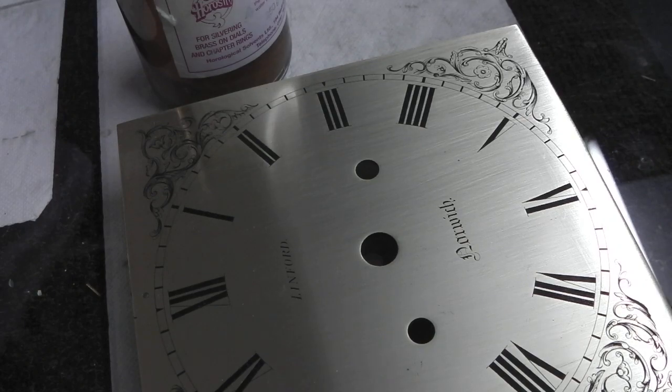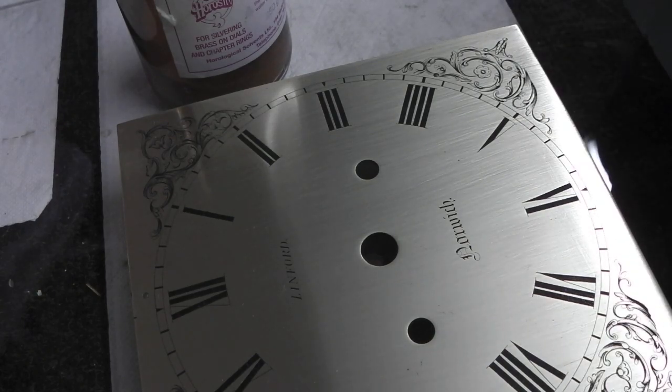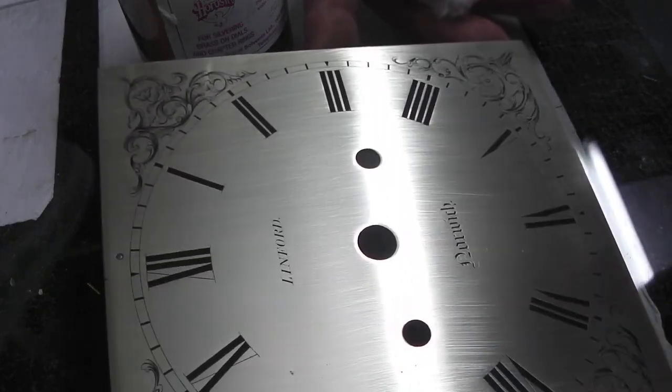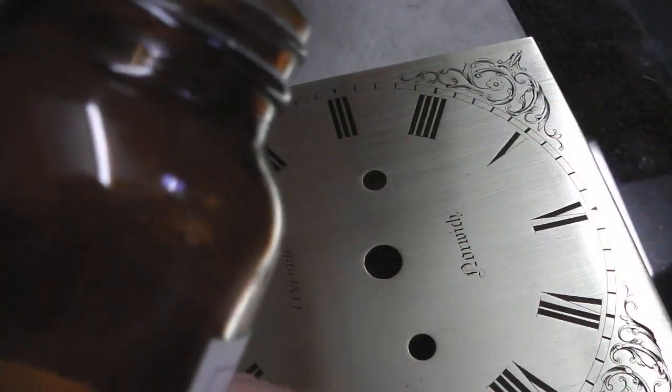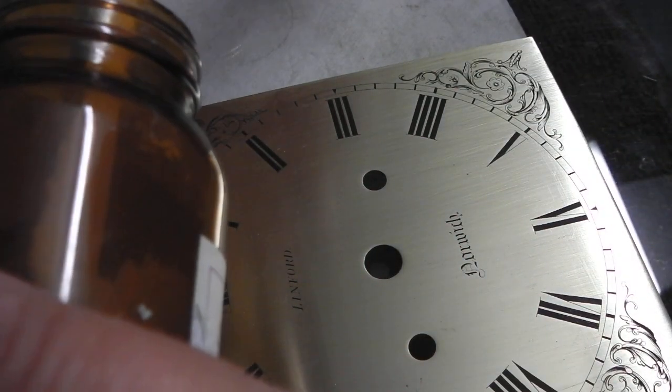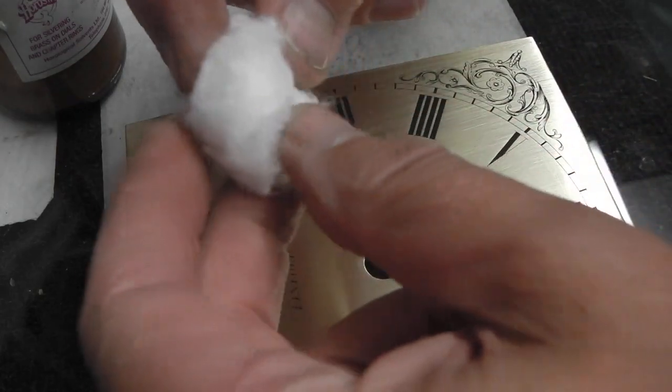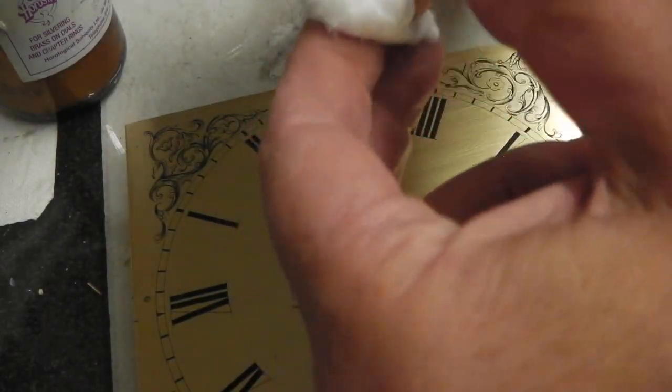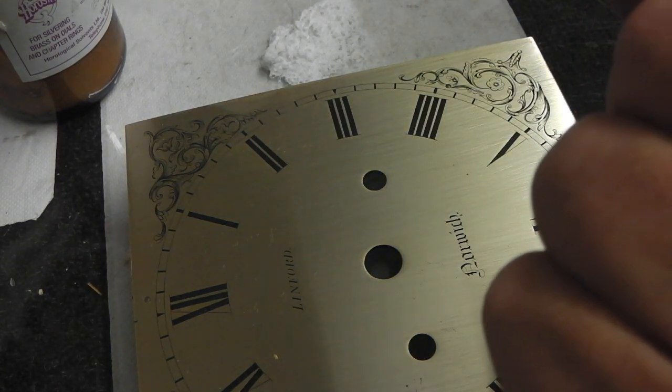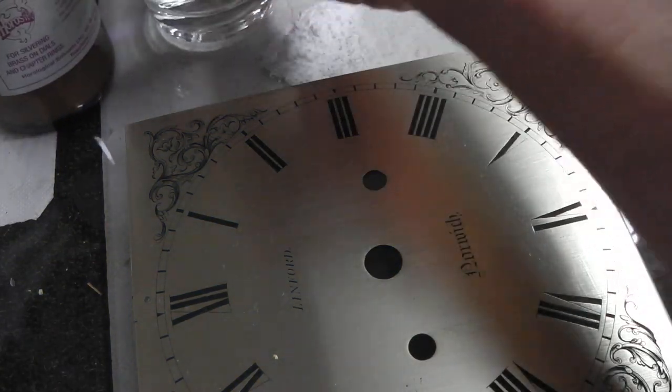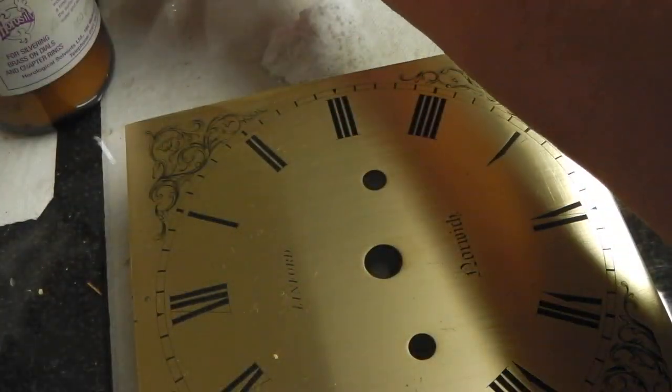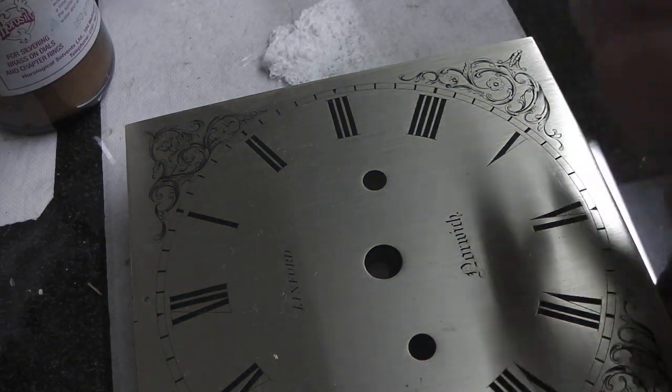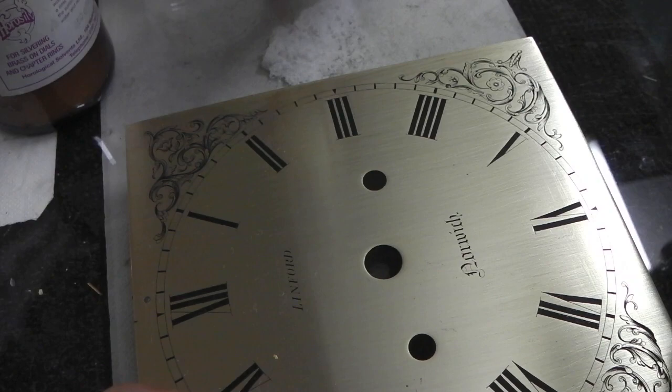The next stage in silvering the dial is to apply the new silver to the freshly prepared brass surface. This is the way I go about it. First I take a quantity of silvering powder and a small piece of cotton wool which I just dampen slightly in water. Not too wet. It's nice and damp to make a solid pad.